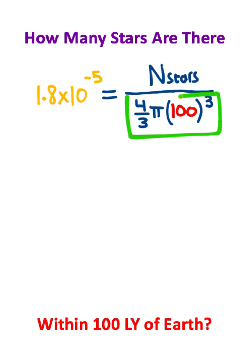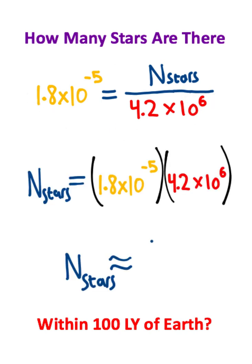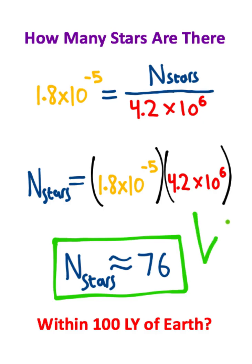Now if you type 4 over 3 times pi times a hundred cubed into your calculator, you should get a value of approximately 4.2 million. And what I now need to do is take the 4.2 million and multiply it on both sides of this equation. I get 75.6 which I'm going to round up to 76. So this would be the number of stars within a 100 light year radius of Earth.